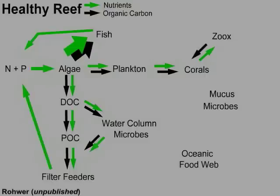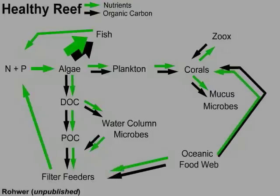Corals exude an energy-rich mucus onto the surface, which is used by their associated microbes. Other nutrients and DOC entering the coral reef ecosystem from other sources are also assimilated by the corals and filter feeders on the reef and become incorporated into the system.